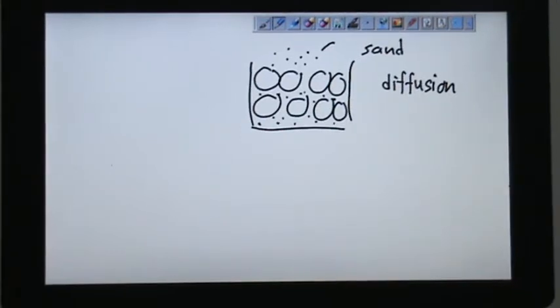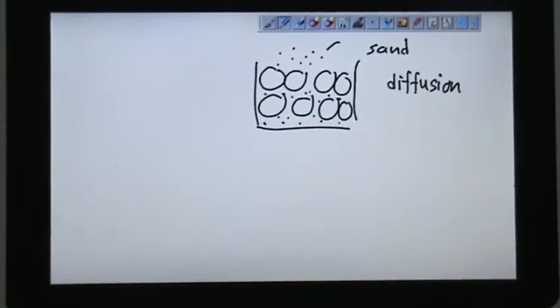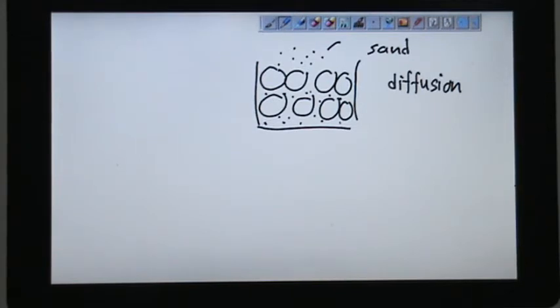Not only do they move from high concentration region to low concentration region, they also move from one place to in between particles, such as this. Sand moves into the empty spaces between the oranges. So this is diffusion.